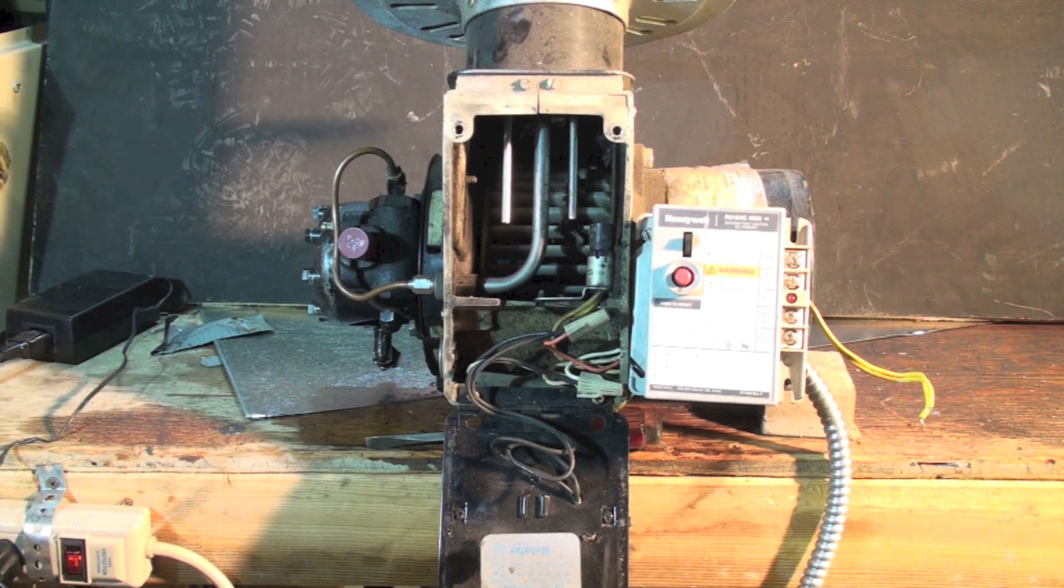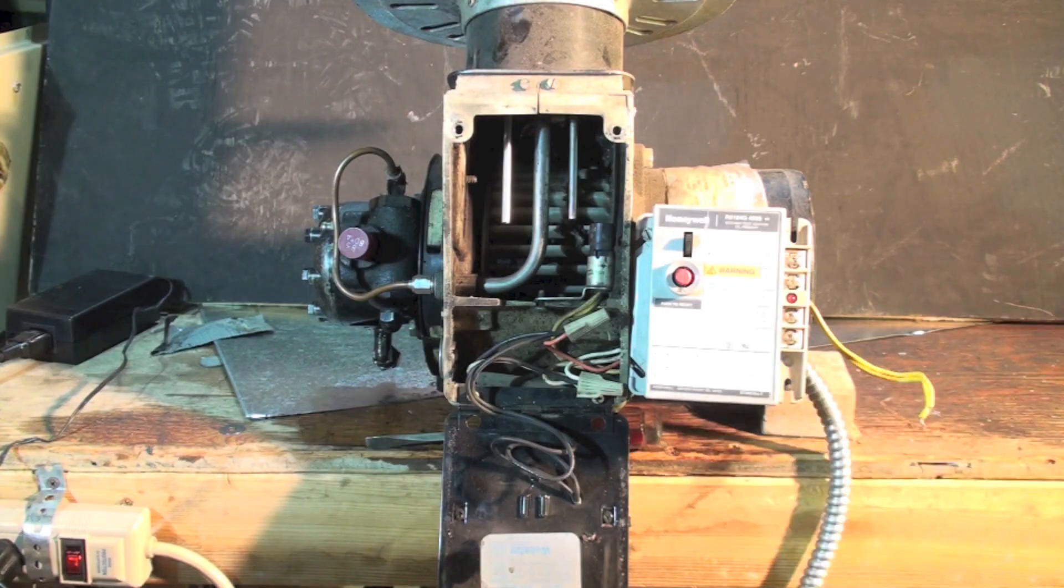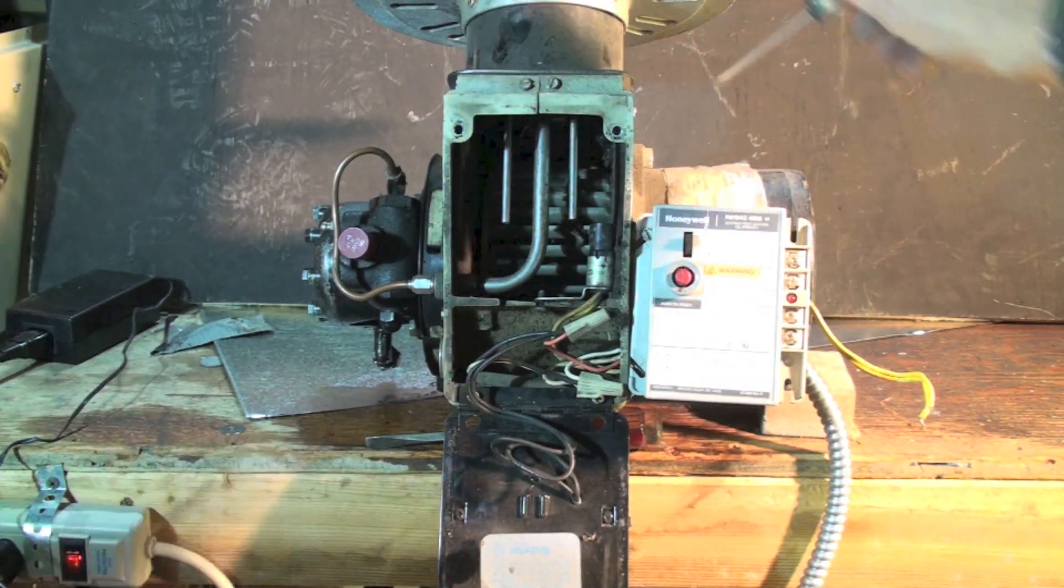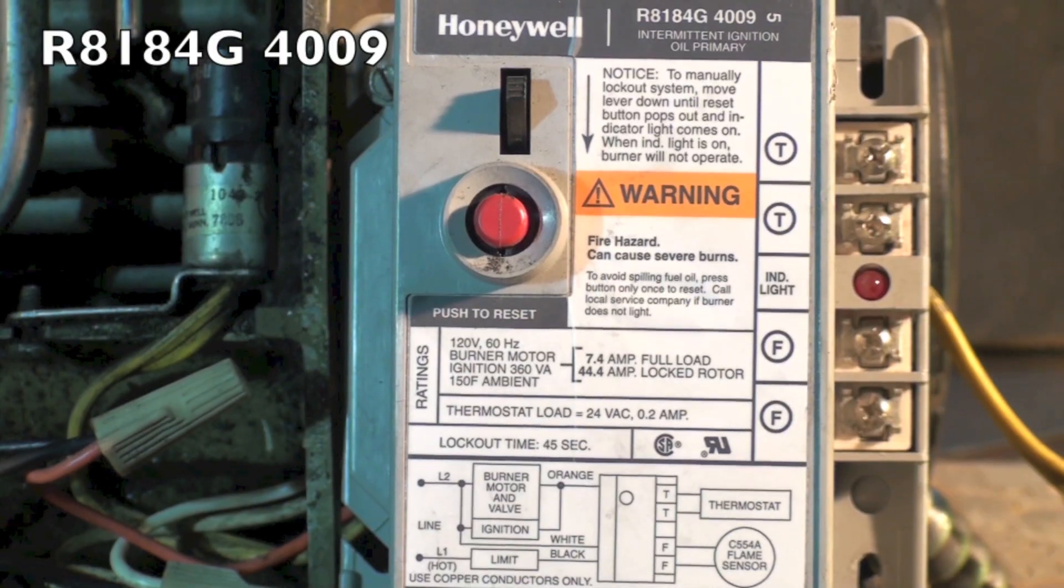All the parts that we're wiring in this are 120-volt input. The cad cell relay gets 120 volts, the transformer gets 120 volts, and the motor is 120 volts. The first thing I wanted to do is let you know which control we're using.